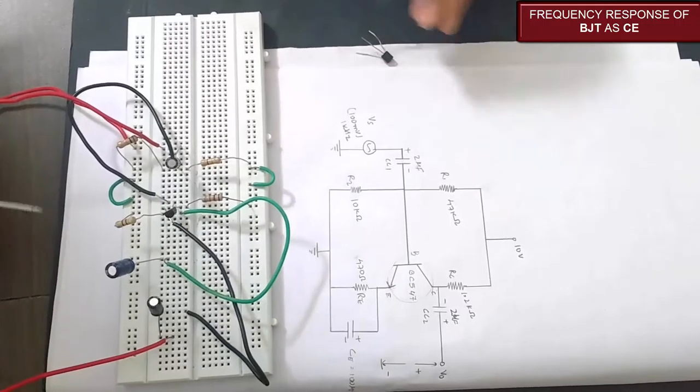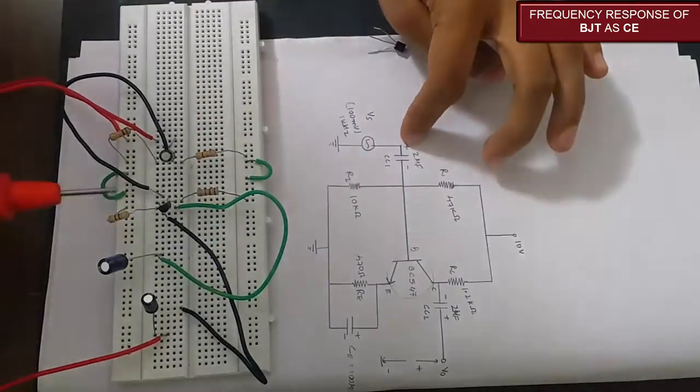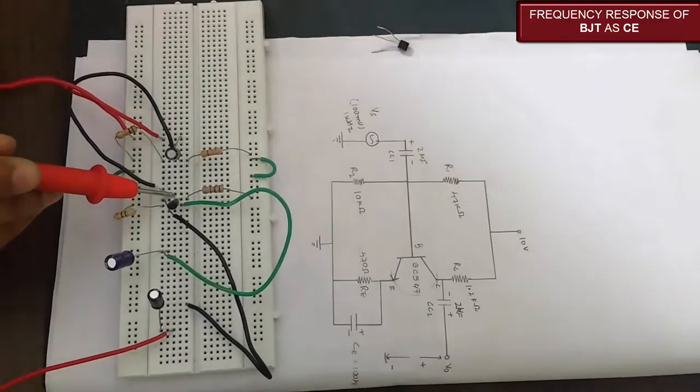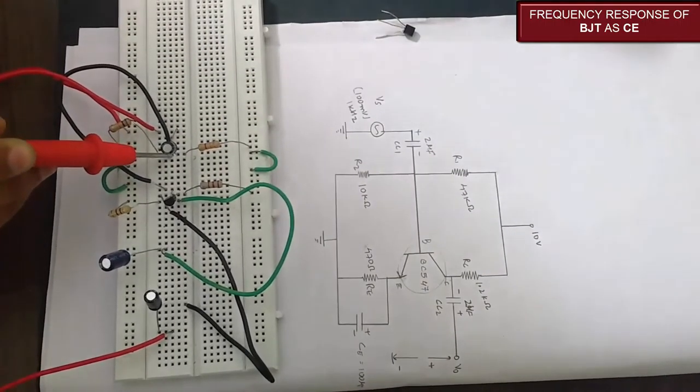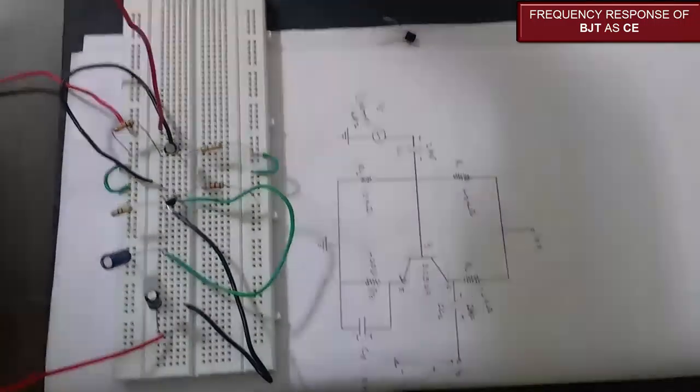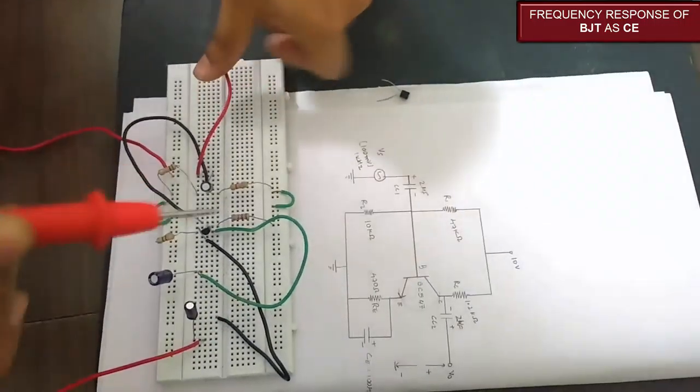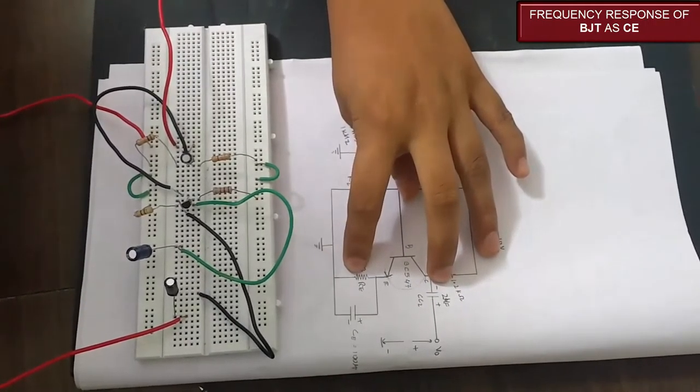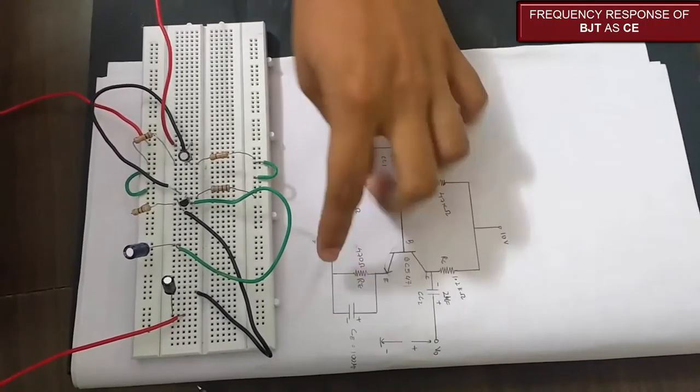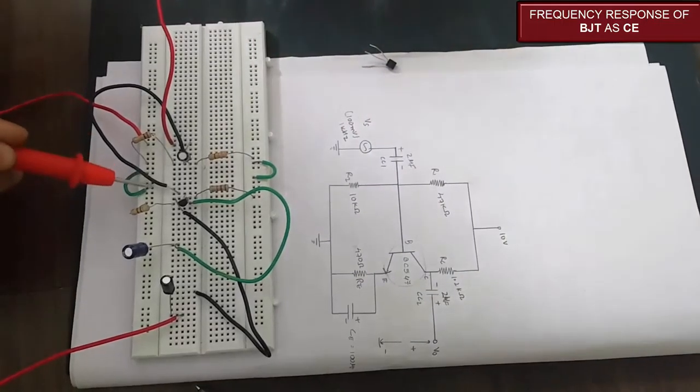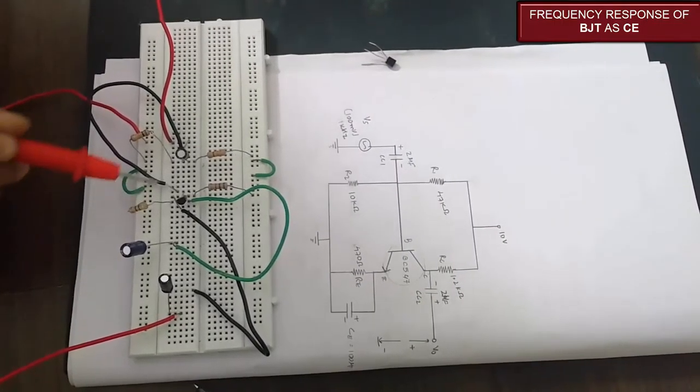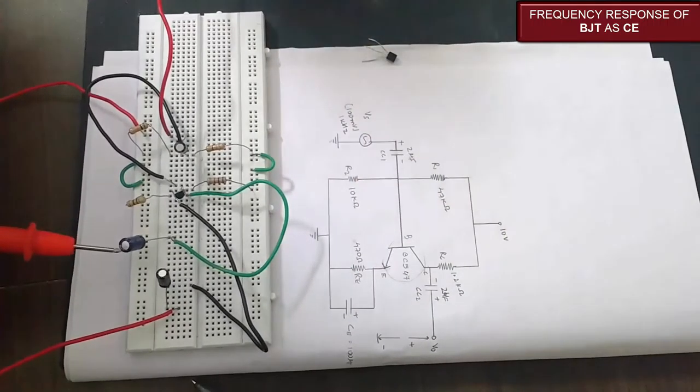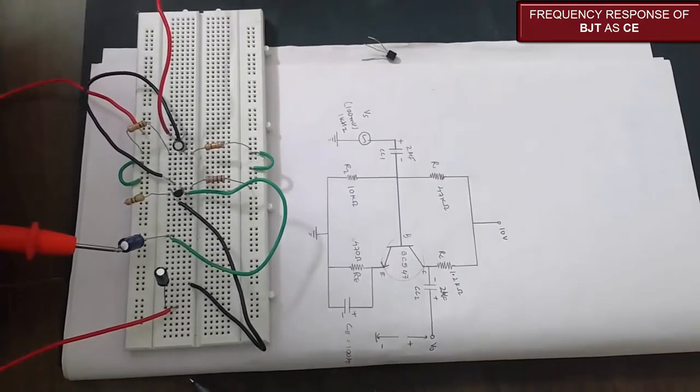Accordingly, the base, we are giving a capacitor and input to the base. This is the base, it is connected to this capacitor, and we are taking input from this wire. Secondly, emitter is, a resistance is connected to emitter and that is grounded. This resistance is connected and it is grounded, and CE is this capacitor which acts as a bypass capacitor.